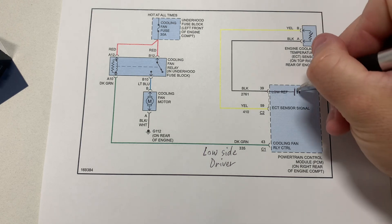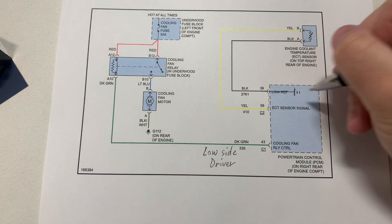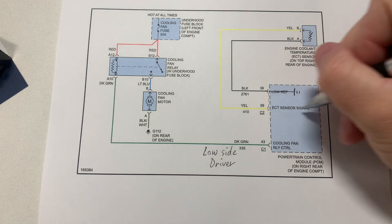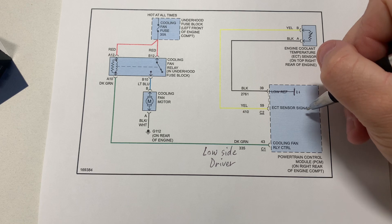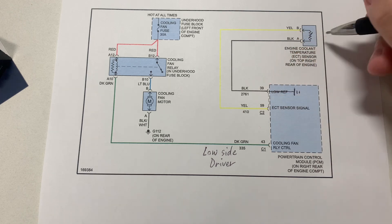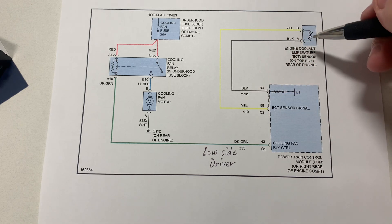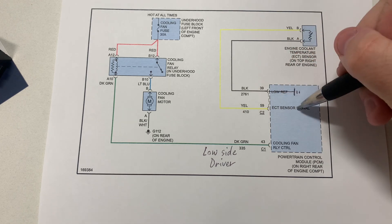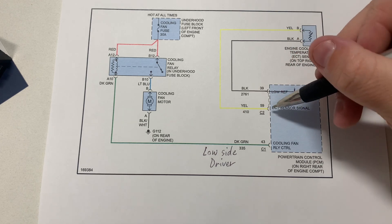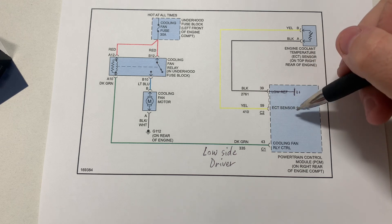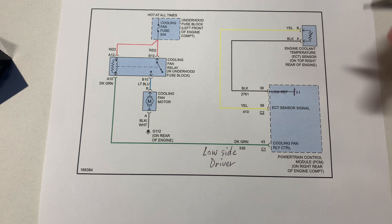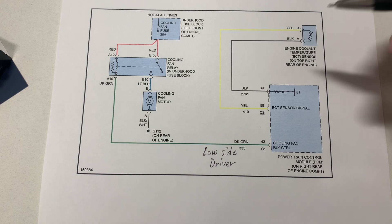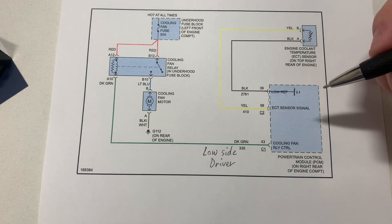By contrast, if the sensor had power all the time and ground on the signal side, then when you unplugged it or had an open circuit it would default to zero volts, and the computer could set a code for an open circuit. That would be a pull-down circuit.